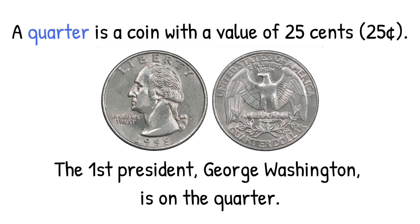A quarter is a coin with a value of 25 cents. The first president, George Washington, is on the quarter.